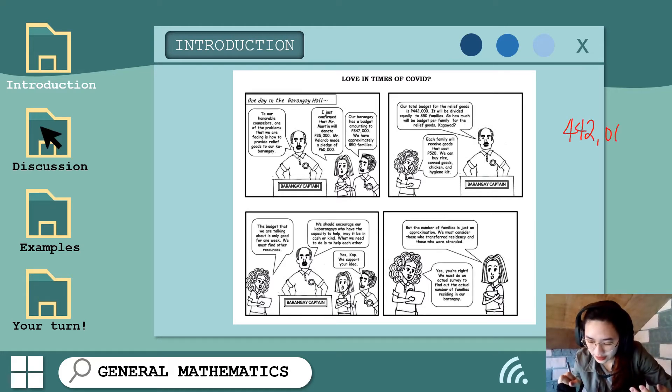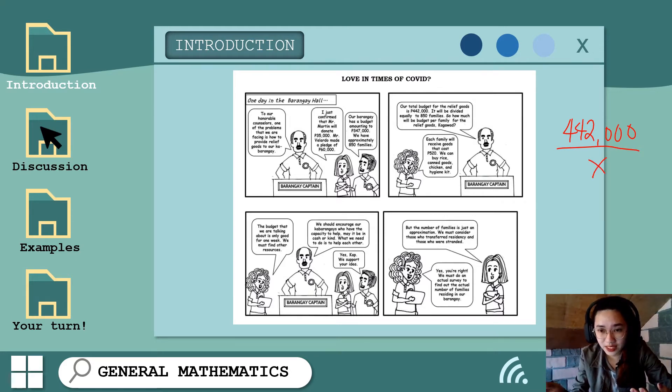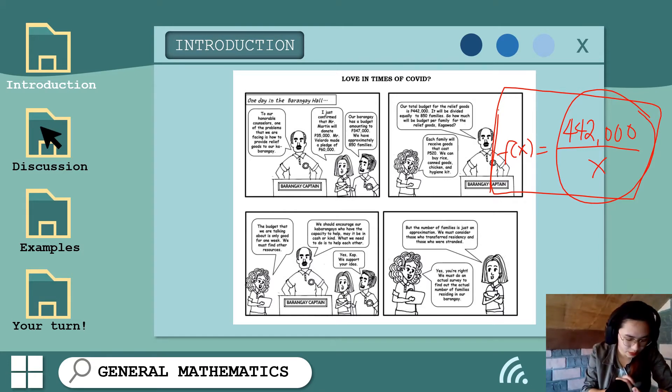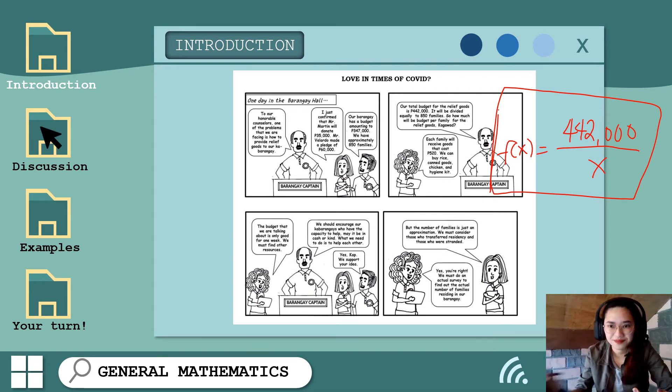let's use x to describe or to represent yung number of families residing in their barangay. To model yung amount allotted per family, kailangan lang natin i-divide yung total amount or total budget ng barangay which is 442,000 sa ating number of families which is x. Ito na yung ating function of amount allotted per family in terms of x which is the number of families residing in their barangay. Itong function na to is an example of a rational function. Para mas maintindihan natin,